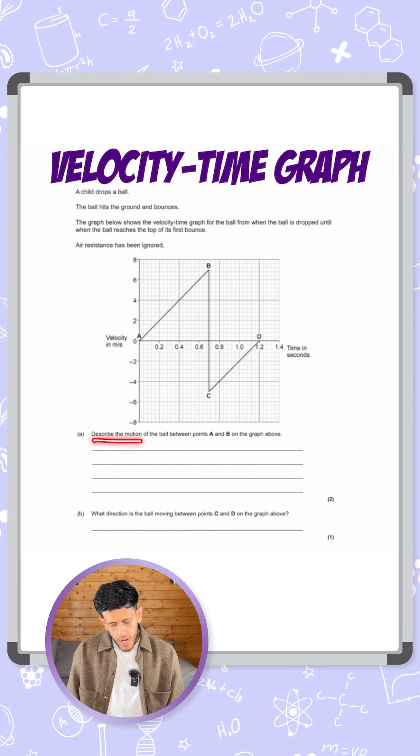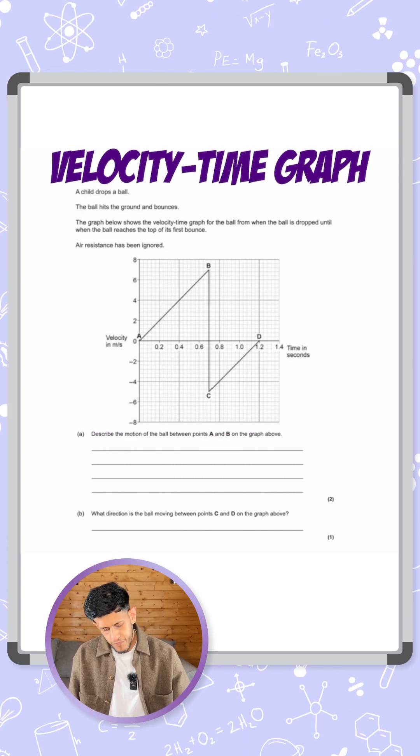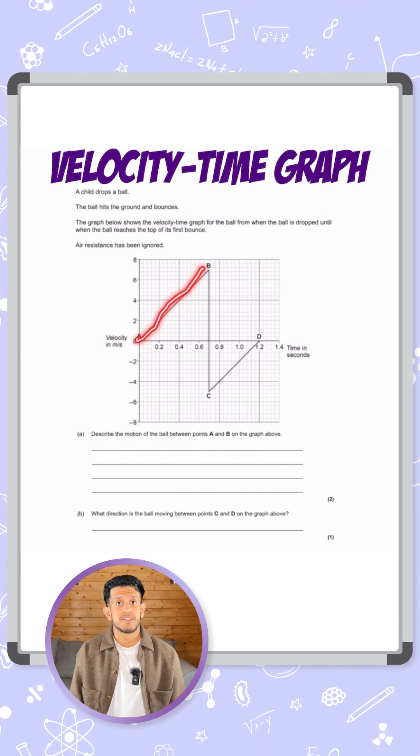So it's telling us to describe the motion of the ball between the points A and B on the graph above. From A to B, it starts at zero and then it reaches B. It's a straight line.